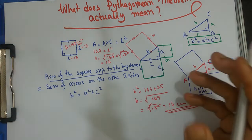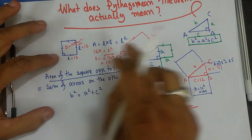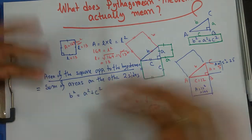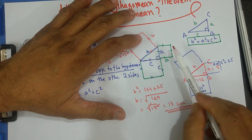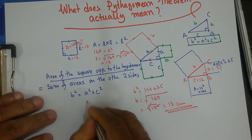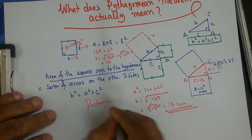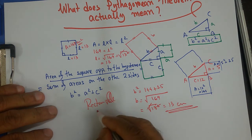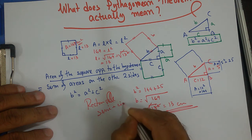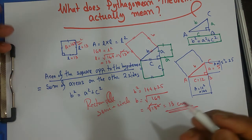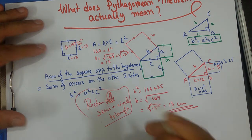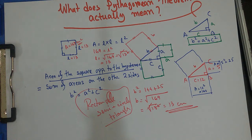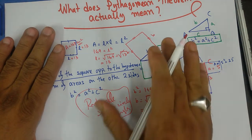Now the question is: instead of the area of a square, will it work for other shapes? Will it work for a rectangle? Will it work for a semicircle? Or will it work for a triangle? That's a question to explore, and that's what I'm going to discuss in my next video.